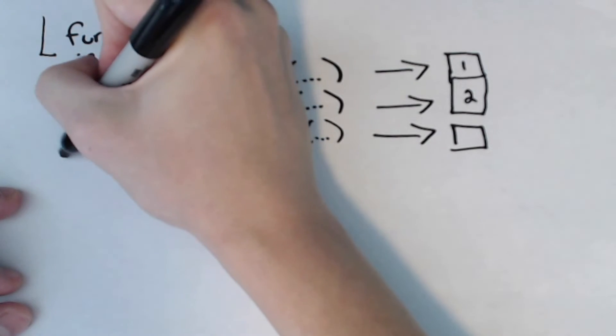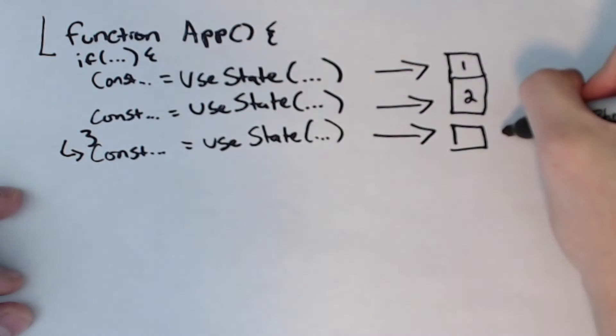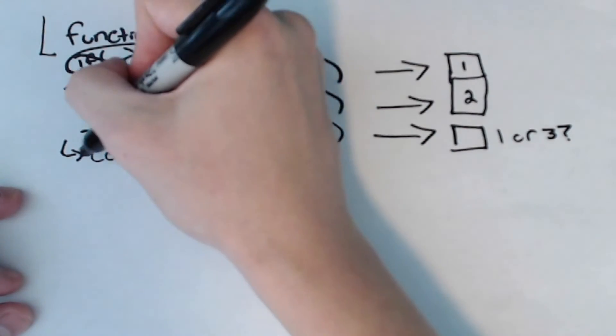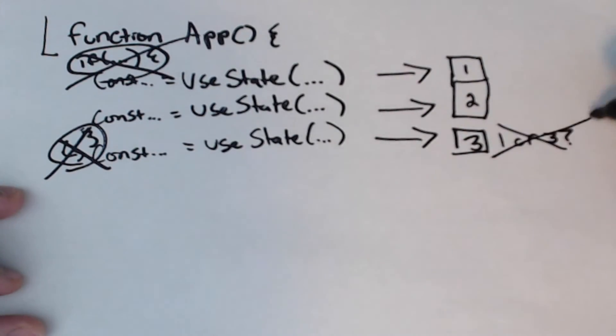That would be bad. And the reason why is when React comes in here, if it doesn't hit that if and it comes here, then that's the first useState call it sees. It has no way of knowing if this is piece of state one or three. And so this if statement is strictly disallowed. Do not do that.